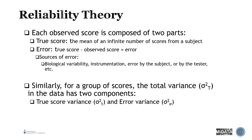In stats theory, each observed score is composed of two parts: the true score — theoretically the mean of an infinite number of scores from a subject — and the error, which is the true score minus the observed score. Sources of error include biological variability, instrumentation, error by the subject or tester. Similarly, for a group of scores, total variance has two components: true score variance and error variance.